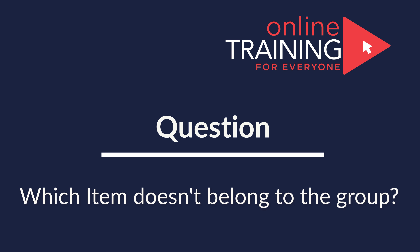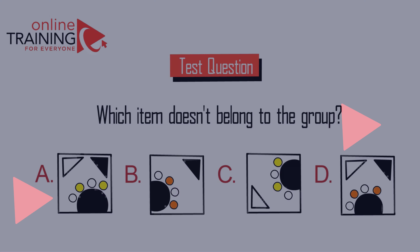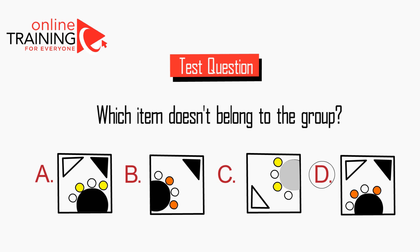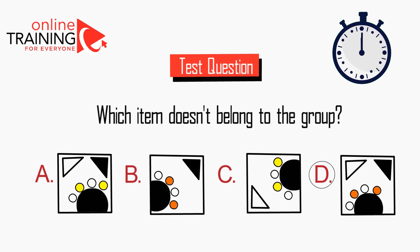This type of question is very frequently used on the test — you are typically asked to determine the item which does not belong to the group. You are presented with choices A, B, C, and D; each item is a square which contains multiple different items inside. You need to determine the item which does not belong to this particular pattern or sequence. Give yourself 5 to 20 seconds to see if you can come up with the solution.